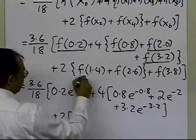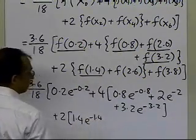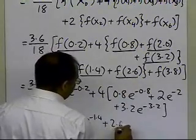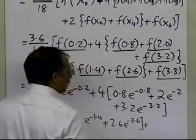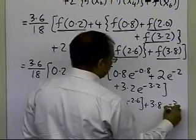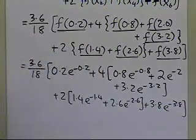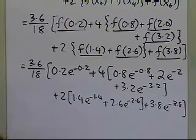Plus 2 times the value of the function at 1.4, which is 1.4 e to the power minus 1.4, plus the value of the function at 2.6, which is 2.6 e to the power minus 2.6, plus the value of the function at 3.8, which is 3.8 e to the power minus 3.8. So that's what we are getting as the values here, and now what we're going to do is we have calculated these values for you, and this is what we're going to get.